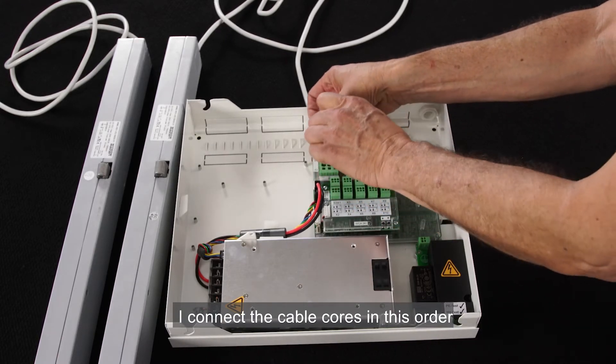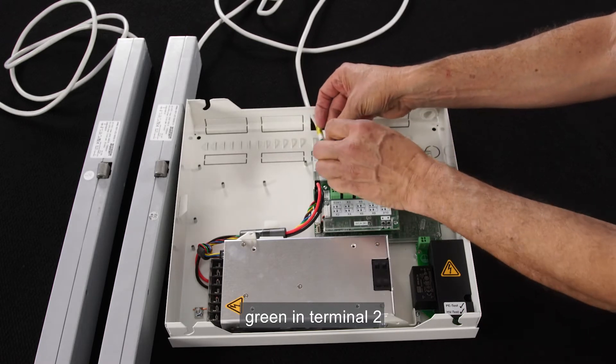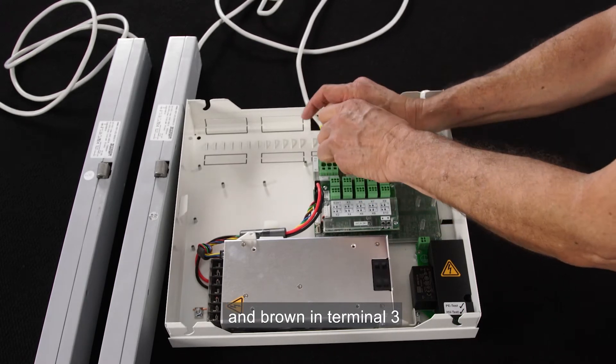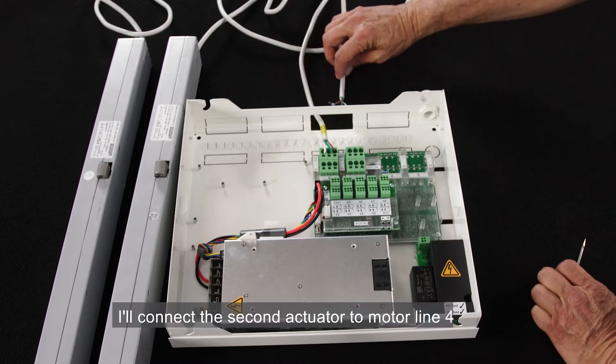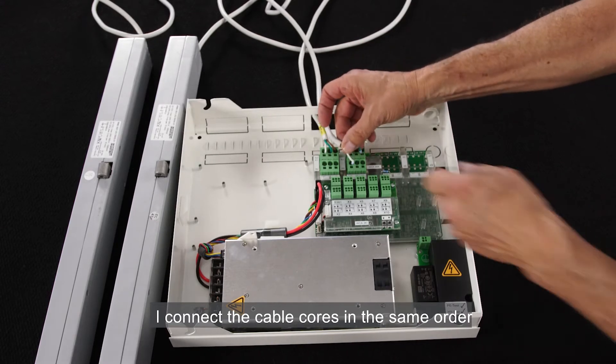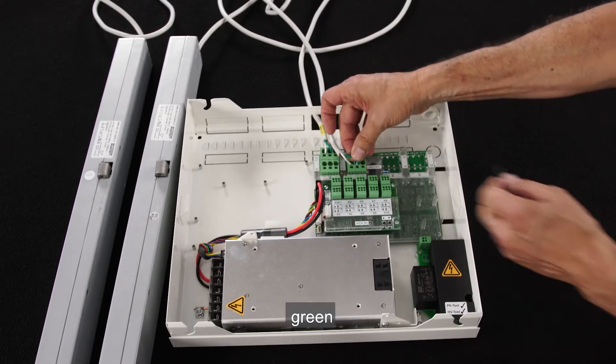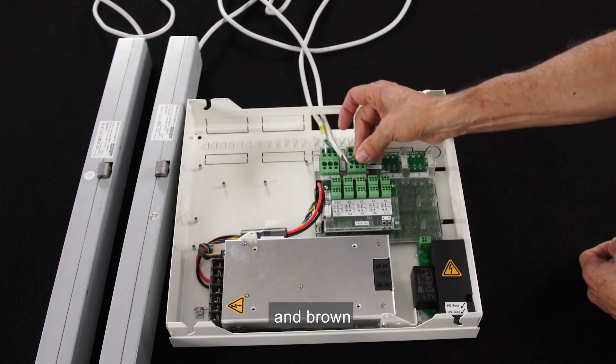I connect the cable cores in this order: white in terminal 1, green in terminal 2, and brown in terminal 3. I'll connect the second actuator to motor line 4. I connect the cable cores in the same order: white, green, and brown.